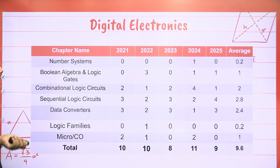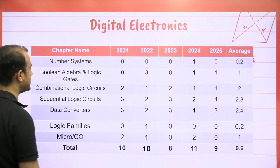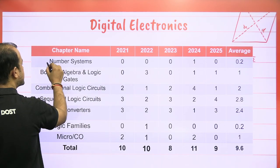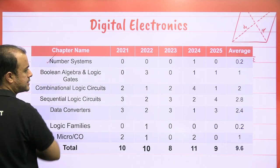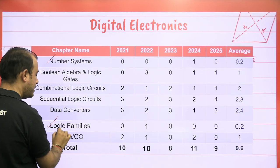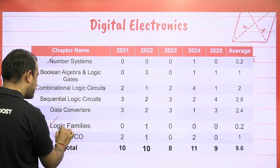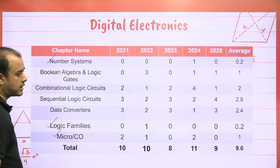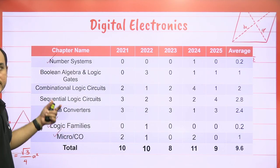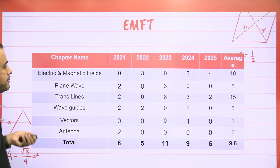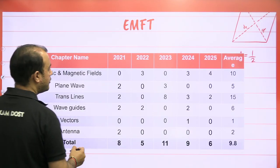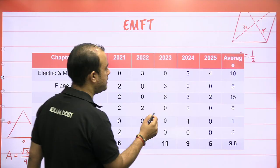In Digital for ECE, skip Number Systems, skip the Logic Family, and you can skip Computer Organization. The rest of the chapters are important for ECE.